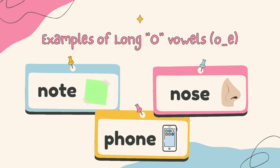Moving on, we're going into the long O vowels. Now, the short and long O vowels have the same sound — the sound is always going to be O. So: N, O, T — note. N, O, S — nose. P, H, O, N — phone. Every time there's an O space E, the E is quiet — very quiet, like it's hiding and doesn't want to be heard. So that's why you only say the O.